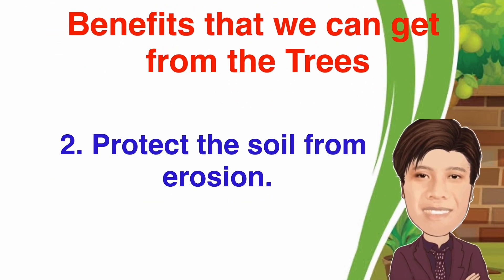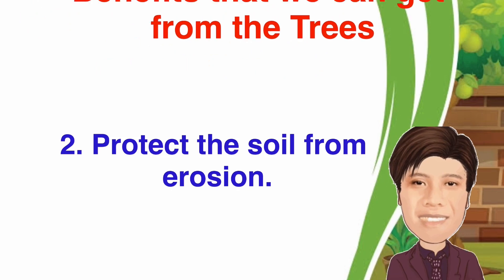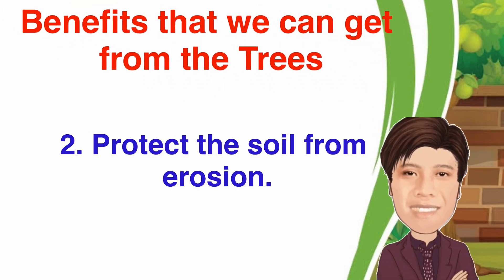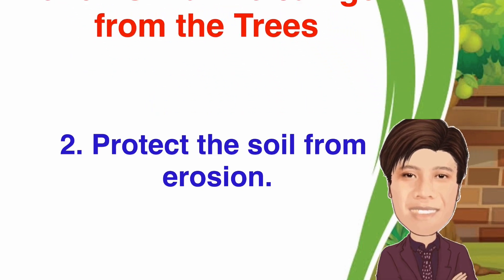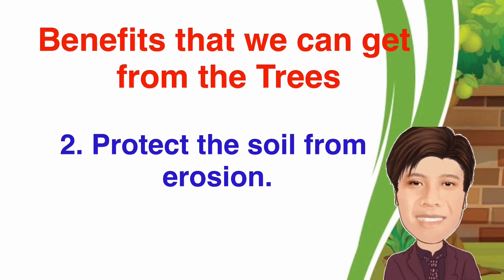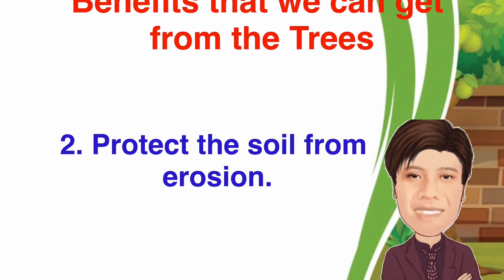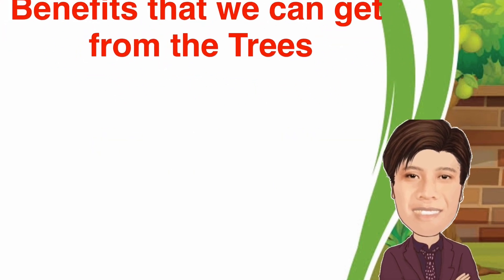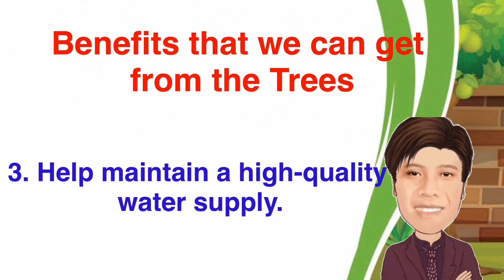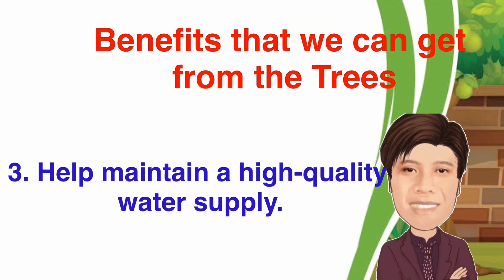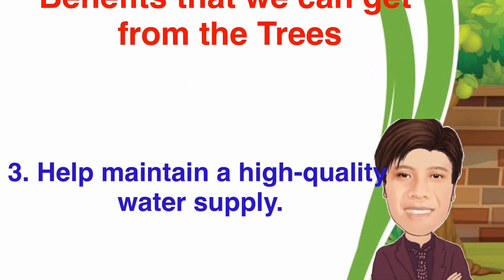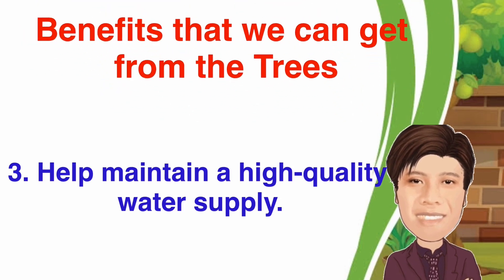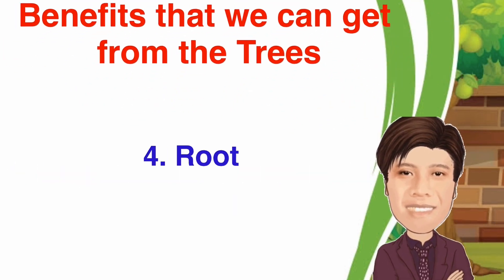2. They protect the soil from erosion. Have you seen big roots that extend several meters from the trunk or go deeper into the soil? These roots hold the soil, preventing it from eroding when rain or flood comes. 3. They help maintain a high-quality water supply. The roots of plants and trees help strain the dirt and cleanse the water as it passes through the roots.